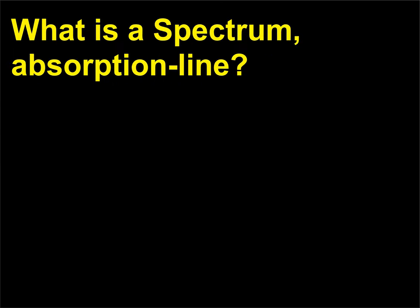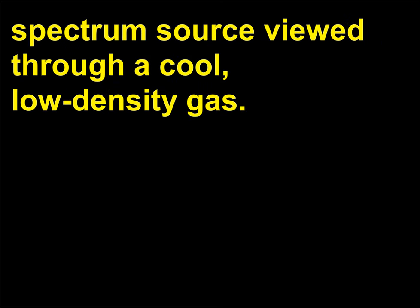What is a spectrum, absorption line? Continuous spectrum with dark gaps produced by a continuous spectrum source viewed through a cool, low-density gas.